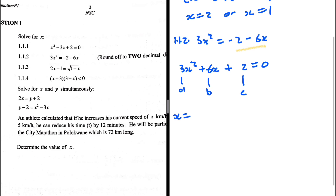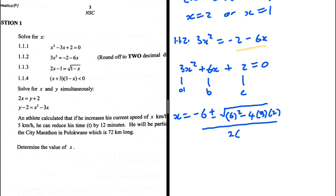So x equals minus b — that is minus 6 — plus or minus the square root of b squared minus 4ac, all divided by 2a. So b squared is 6 squared, minus 4 times 3 times 2, divided by 2 times 3. Let me put that in the calculator: minus 6 plus the square root of 36 minus 4 times 3 times 2, divided by 2 divided by 3. One possible value of x is minus 0.42, and replacing the plus with a minus sign gives minus 1.58.